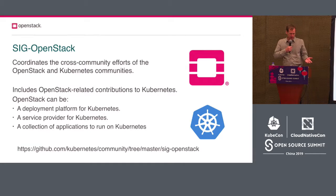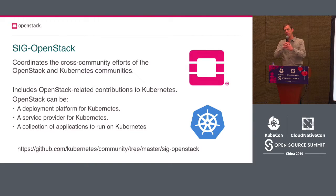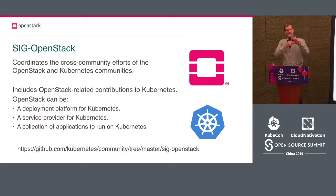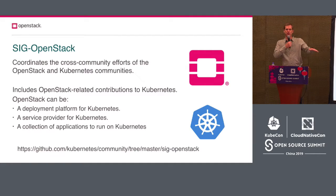Finally, OpenStack can serve as a collection of applications to run on Kubernetes. If you consider that Kubernetes is an orchestration platform for microservices and OpenStack is a collection of microservices meant to deliver infrastructure, you can actually install OpenStack on top of Kubernetes and have that be the management platform for your OpenStack cloud — leading to a situation where you have a full multi-tenant cloud to offer your users.